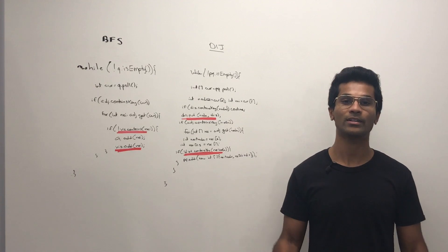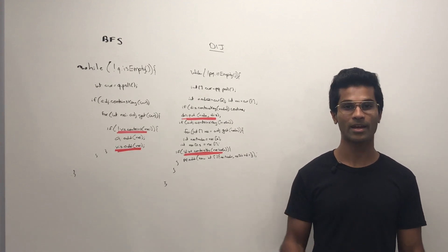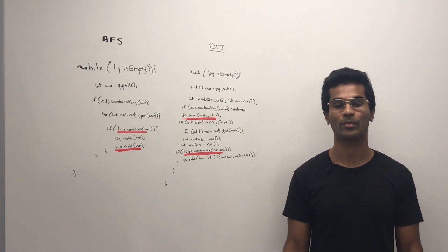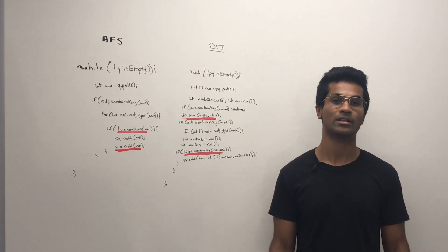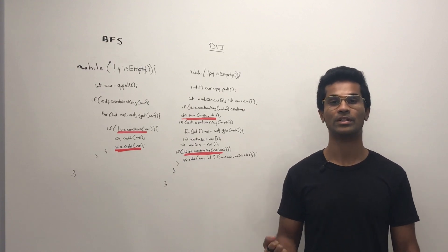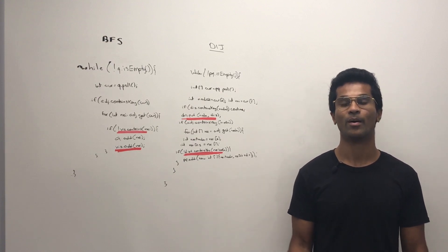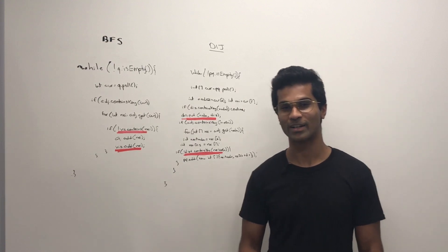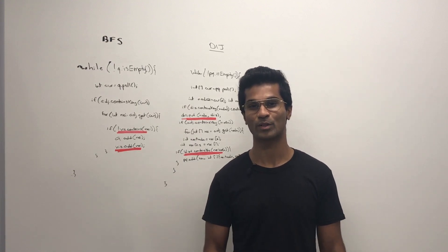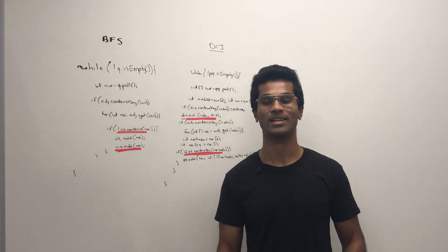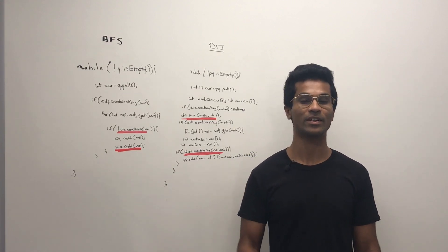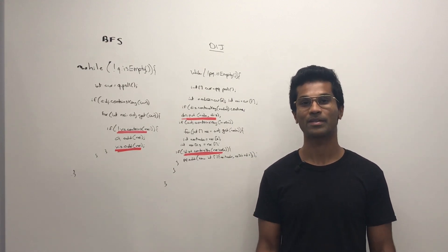But if I had to write the Rabin-Karp algorithm today, I would not be able to implement it from scratch. I remember the gist of it, but the fact that I don't remember how to actually write it from scratch without any aid makes me feel like I didn't study it properly.